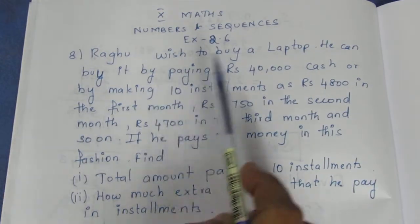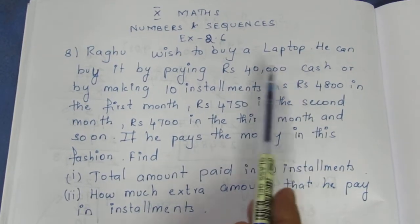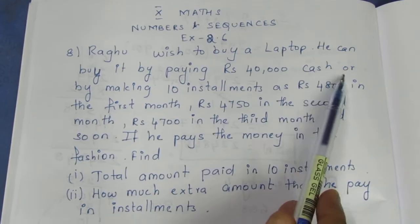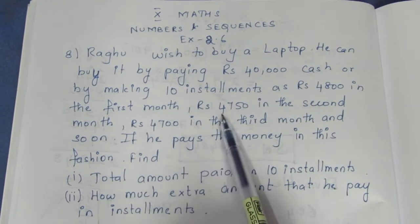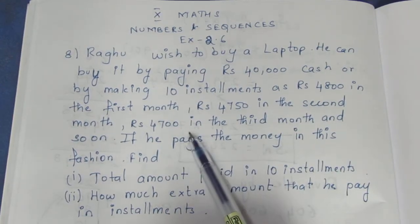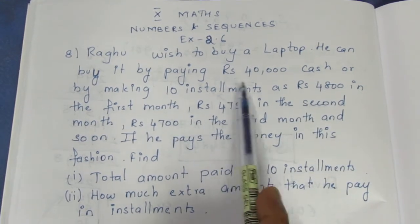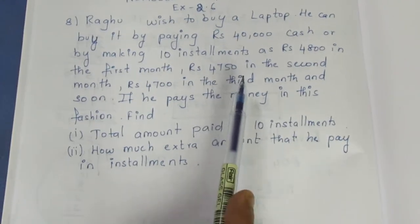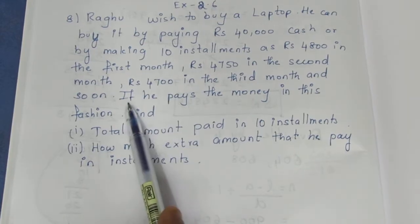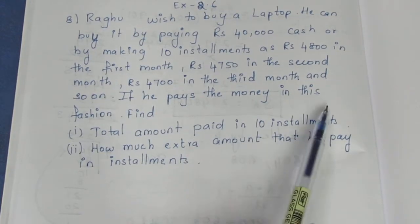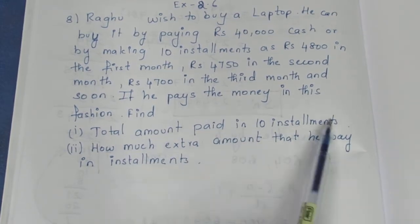Ragu wishes to buy a laptop. He can buy it by paying 40,000 cash. Or he can pay in 10 installments: 4,800 in the first month, 4,750 in the second, and 4,700 in the third month, and so on. Find the total amount paid in 10 installments.